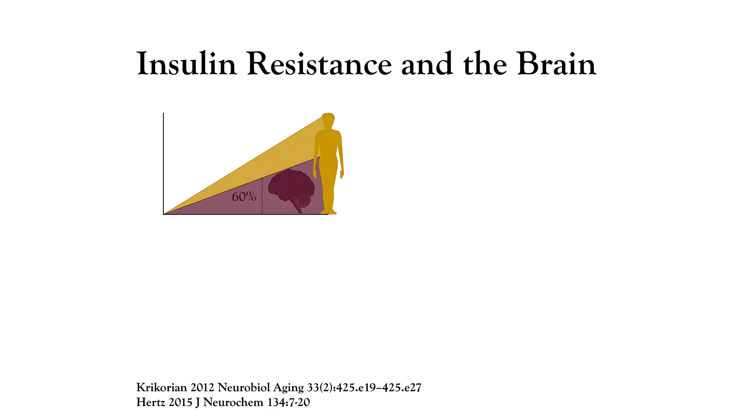Remember that the higher the blood sugar, the higher the brain sugar. So let's say your blood sugar is going too high too often. Then your brain sugar will also be going too high too often.